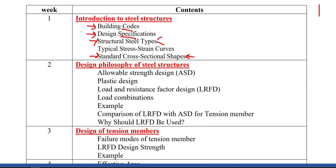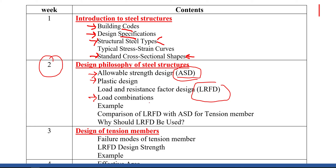In week two, we focus on the design philosophy of steel structures. I'll cover allowable stress design (ASD), one of the most famous design philosophies, then give some hints about plastic design, then discuss load and resistance factor design (LRFD), and explain load combinations as required by ASCE and AISC. We'll then take an example and make a comparison.